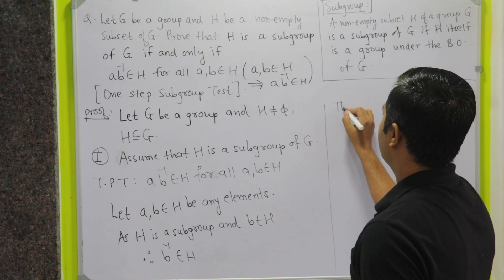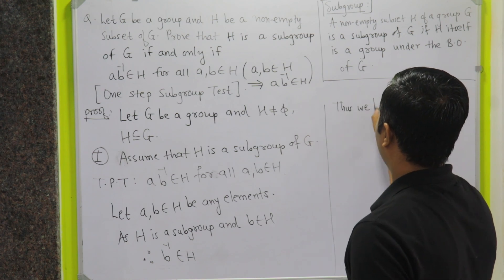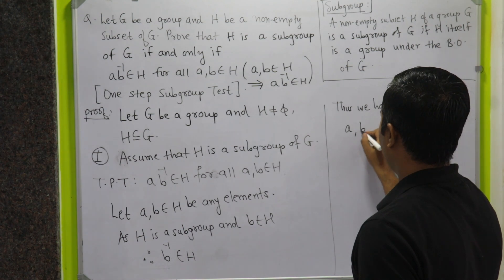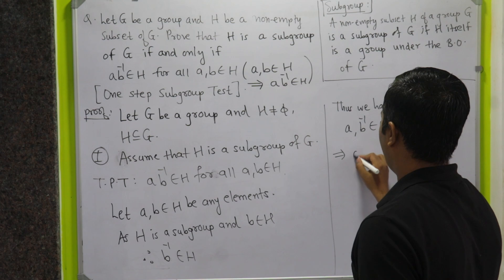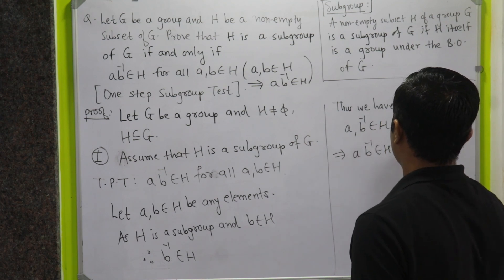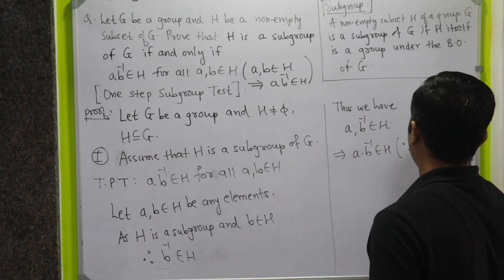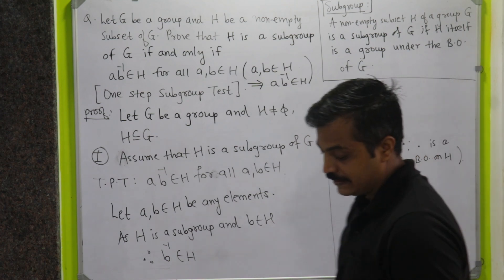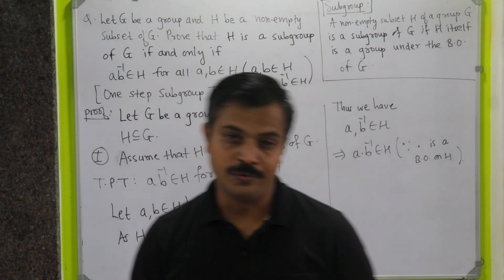Thus, we have A, B inverse belongs to H. This implies AB inverse belongs to H, since dot is a binary operation on H, and that is exactly what we wanted to prove.